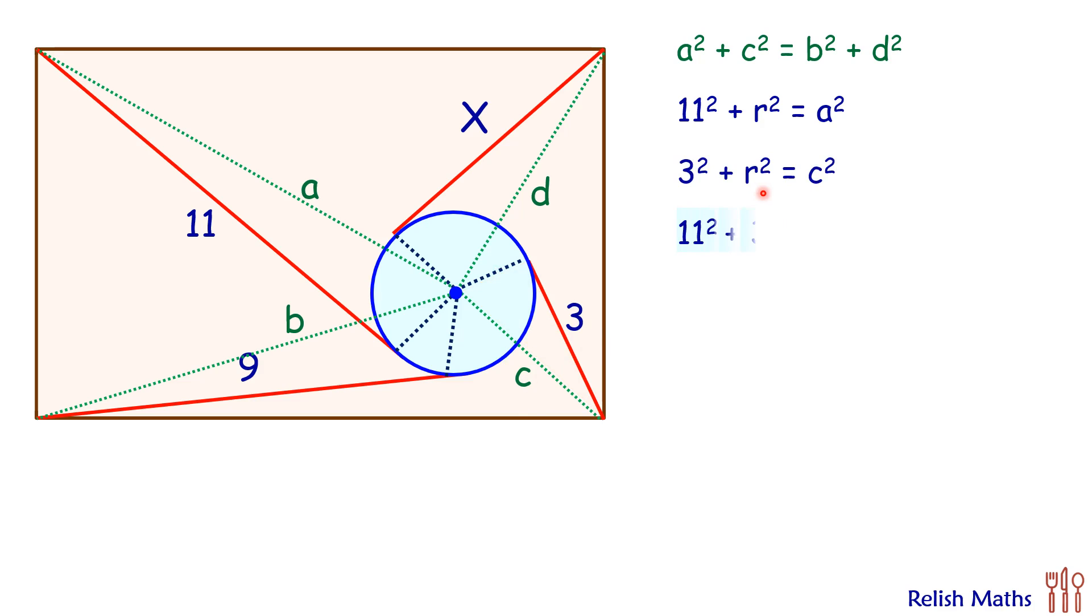Now if we add these two equations, we will get this particular result. Now here if you see, we are getting right-hand side is a² + c². So that is what is one part of British Flag Theorem.